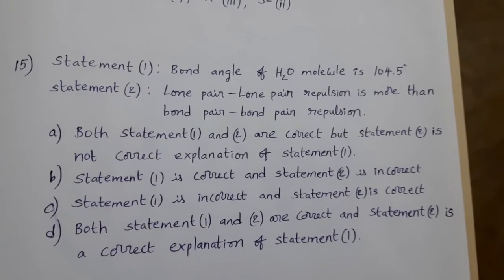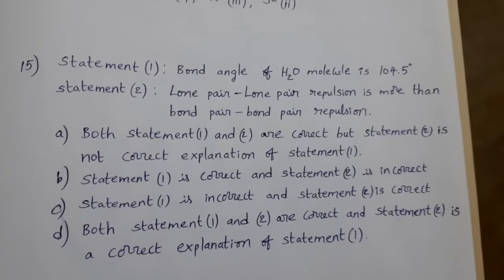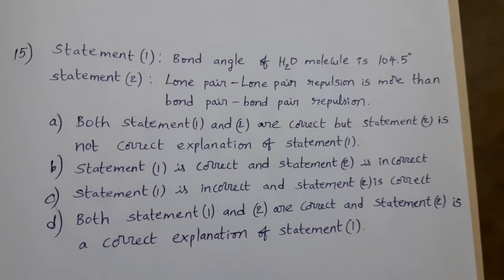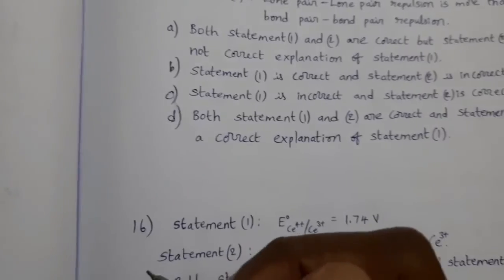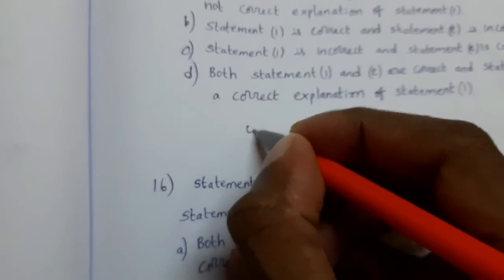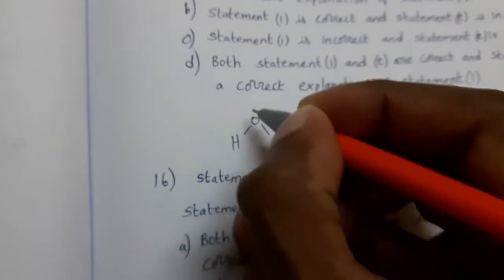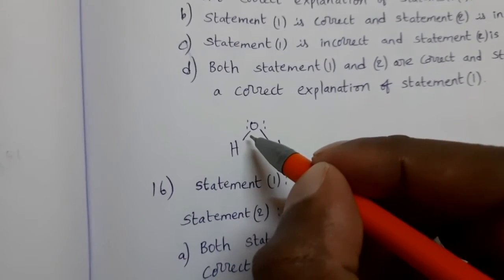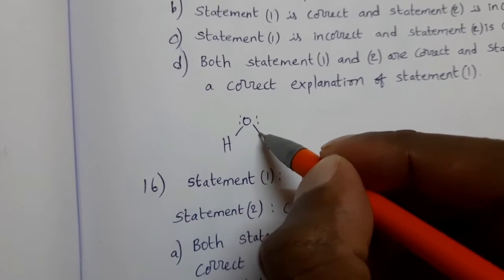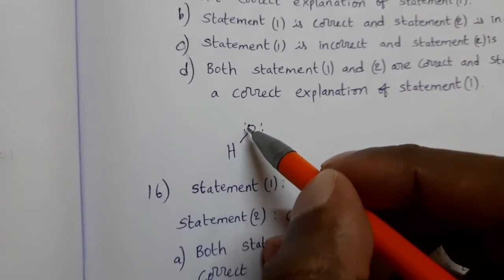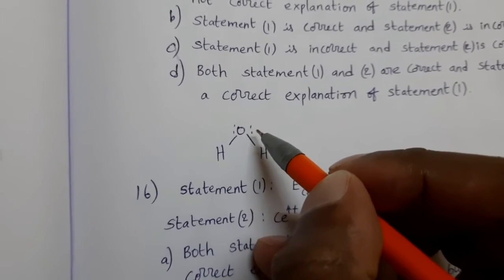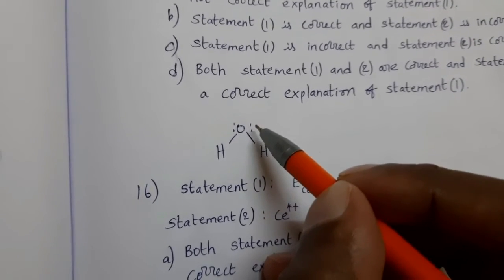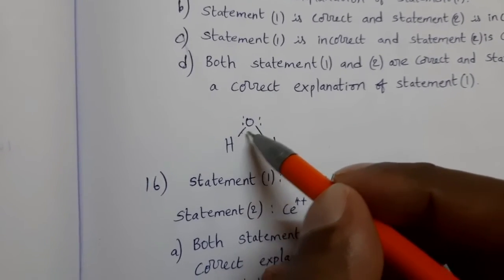Next, statement type questions. Bond angle of H2O molecule is 104.5 degrees. That is correct. Statement 2: Lone pair, lone pair repulsion is more than bond pair, bond pair repulsion. This one also correct. VSEPR theory. See this H2O. This is H2O structure. Oxygen having two lone pair of electrons and it has two bond pair also. The repulsion between this bond pair is less than repulsion between this lone pair and this lone pair.